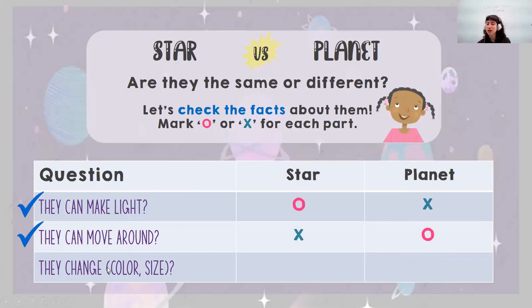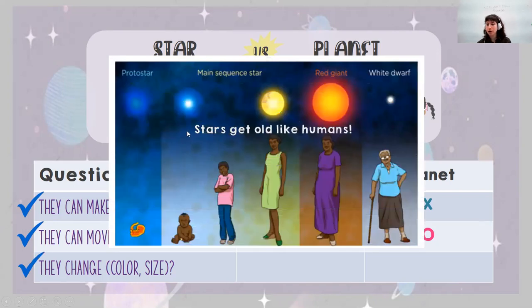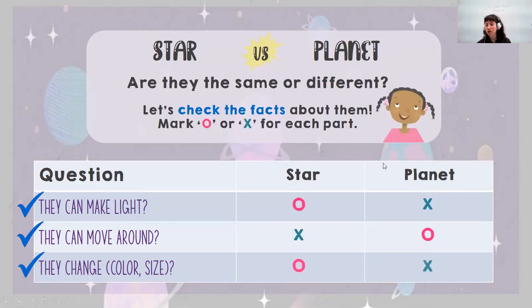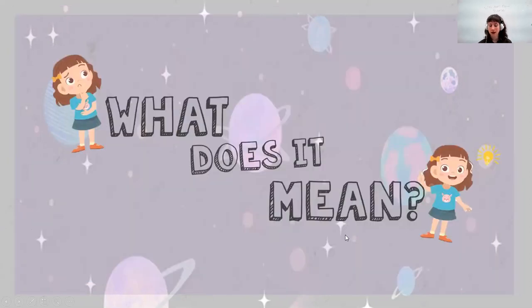And do the stars and planets change in color or size? Let's see. So stars get old like humans. Baby star is really light and then gets brighter and finally smaller. So do they change? Yes, but planets do not.